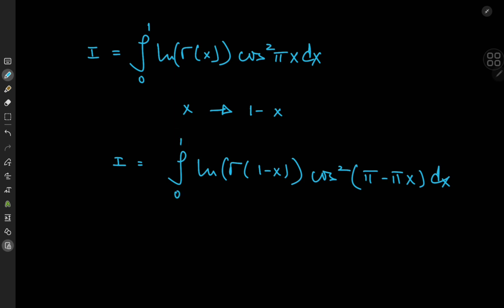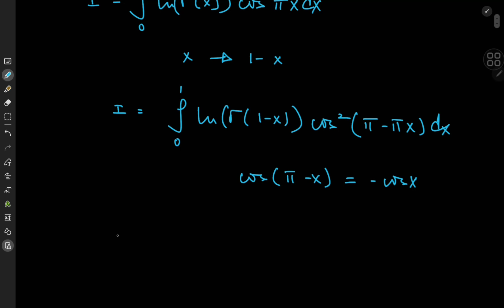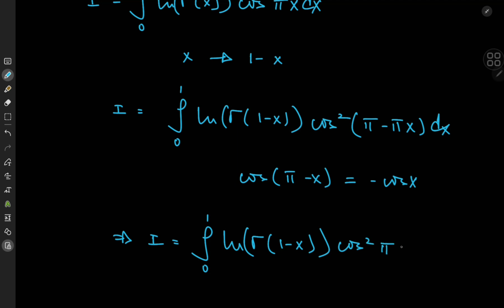So we again have this integral from 0 to 1. Now the cosine of pi minus x equals negative cosine x, but here we have the square of the cosine, so we retain the positive sign. This implies that i equals the integral from 0 to 1 of log gamma of 1 minus x times the square of the cosine of pi x dx.